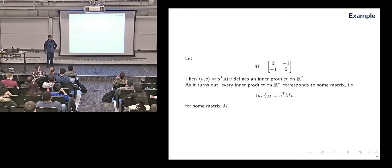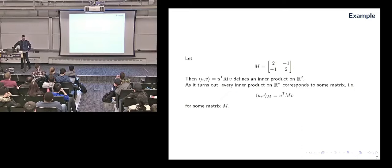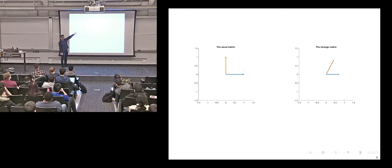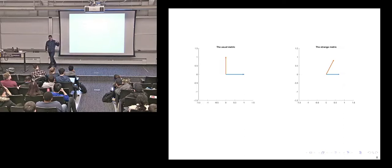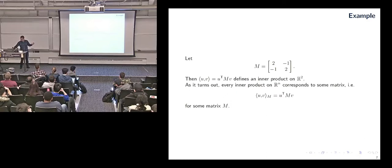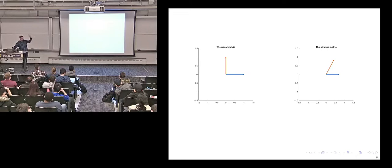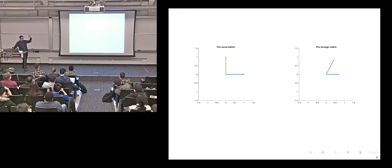Consider a two-by-two matrix — we're acting on R2. If we define the dot product by jamming this matrix in between the two vectors, this still gives us an inner product. Every inner product has the form where you can stick some matrix in the middle, with some fine print on what kind of matrices work. If your matrix is the zero matrix, you'll always get zero, which is a pretty useless dot product.